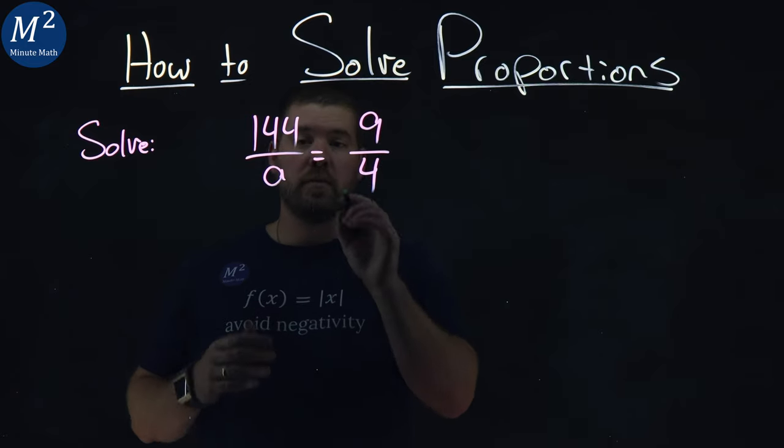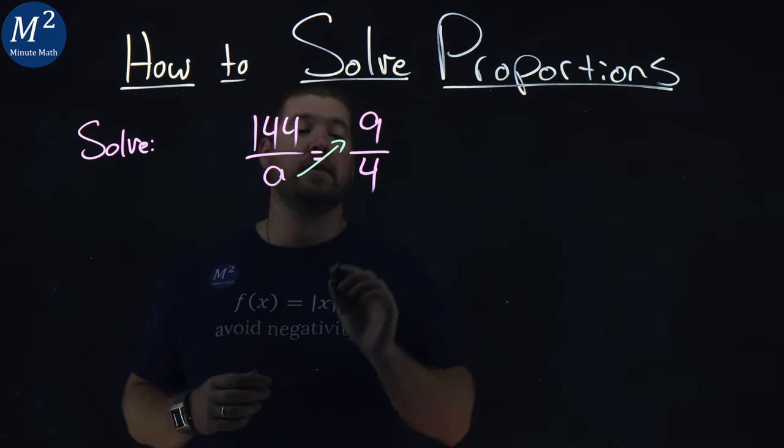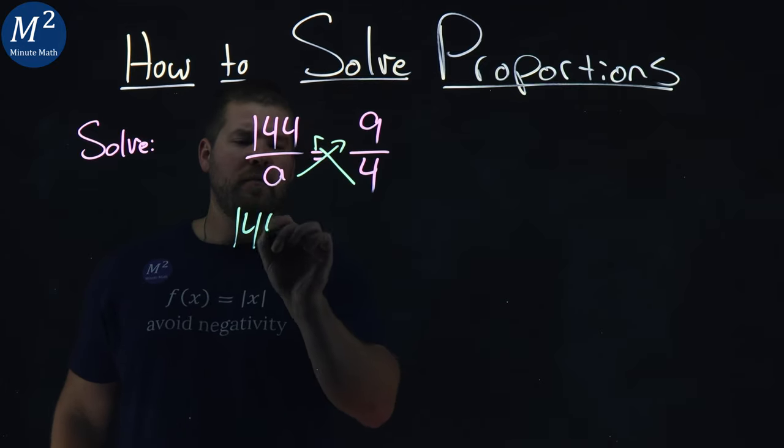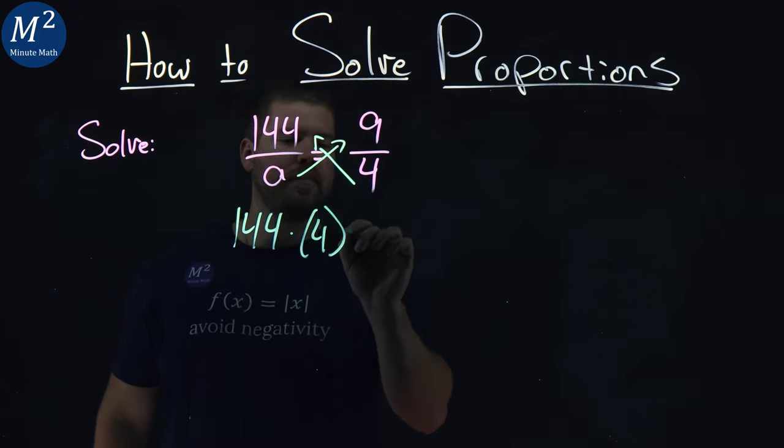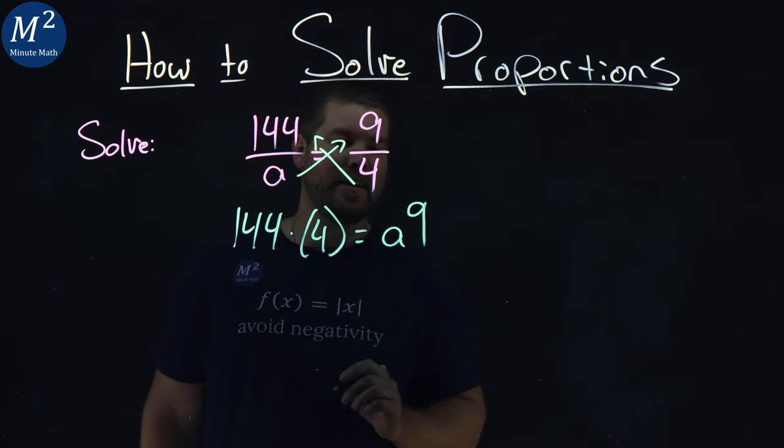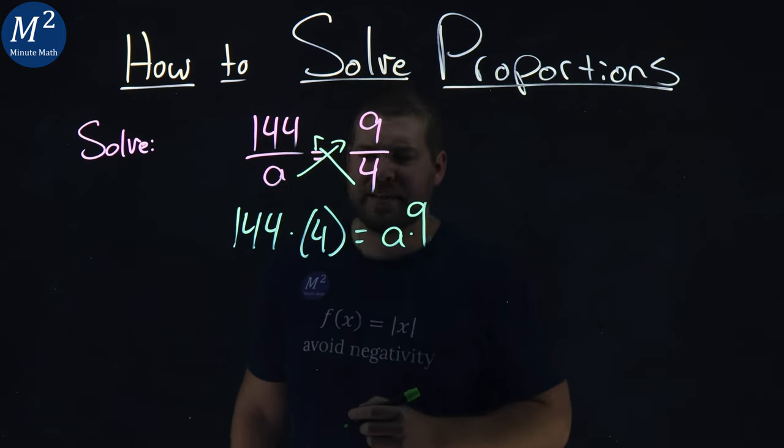Here I want to cross multiply. I'm going to take the A, multiply it to the 9, and the 4 to the 144. So now I have 144 times 4, and it's equal to A times 9. It's kind of weird to write, and I'll write 9A next time.